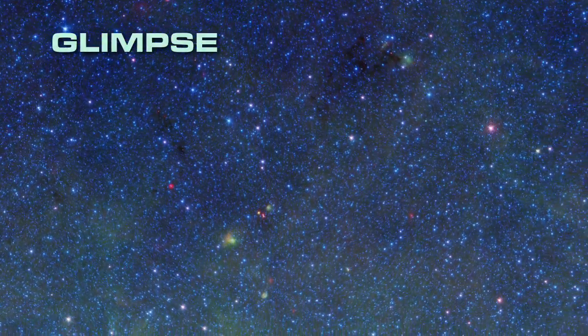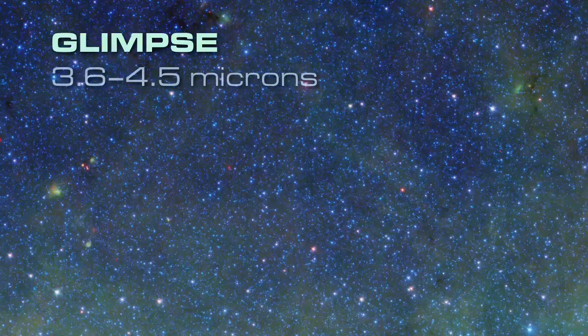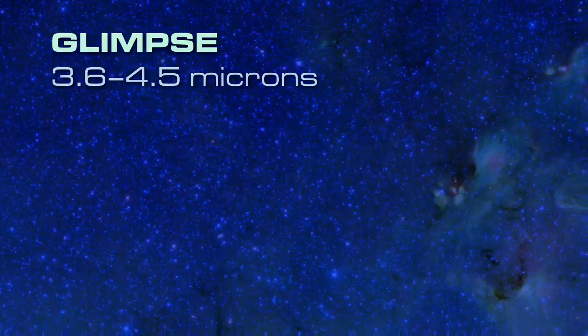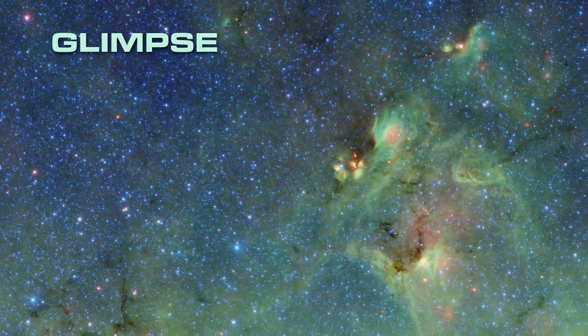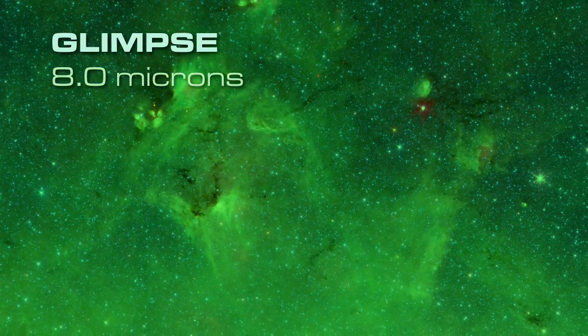The Glimpse part of the survey includes the shorter infrared wavelengths. At 3.6 and 4.5 microns, we see blue stars that, in visible light, are completely hidden by dust. Carbon-based dust molecules show up at 8 microns, represented as green.